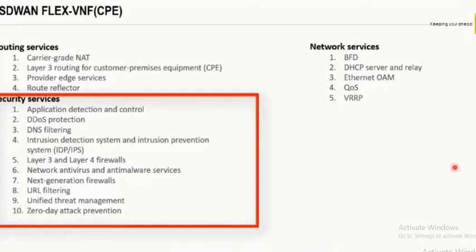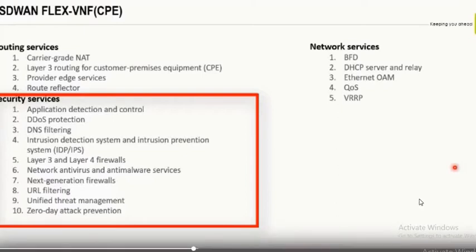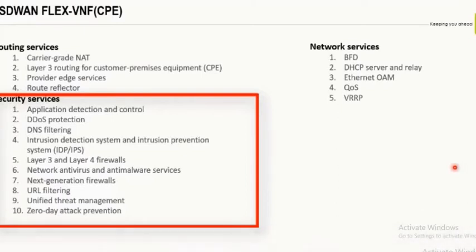Unified Threat Management (UTM) is like a CEO of security — the highest level. Under it, you have Next-Generation Firewall as a VP, and Stateful Firewall as a subset below that. UTM can cover the entire scale of network security and also provides basic firewall features.